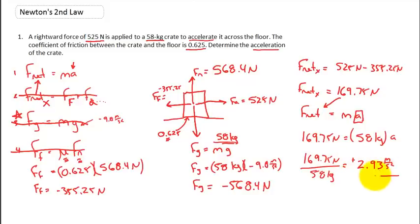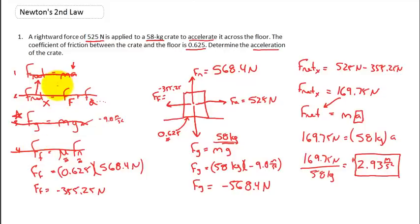That's the answer — 2.93 meters per second squared rightward. What we've done is work through all four formulas, crossing each off as we used it. If you're ever stuck, look at the remaining formulas and the variables you've been given. You cannot use a formula when two variables are missing. To practice, try working through this problem again on your own and see if you get the same answer. Thanks for tuning in — best wishes!